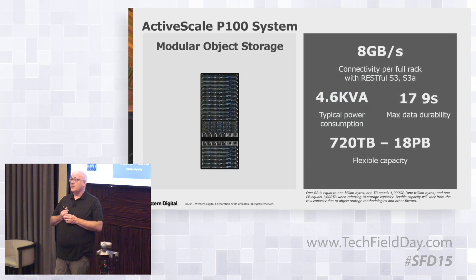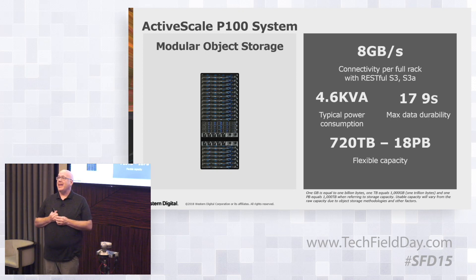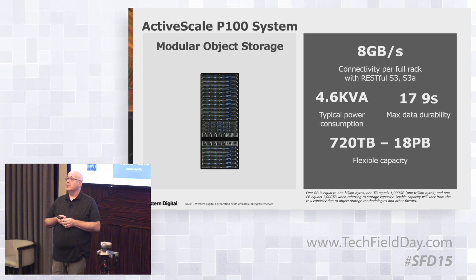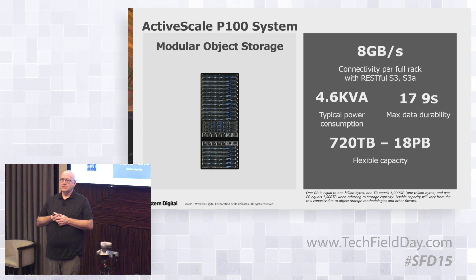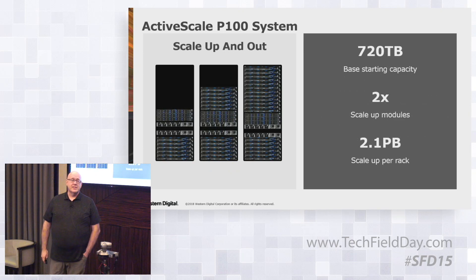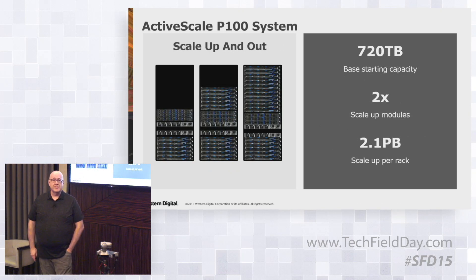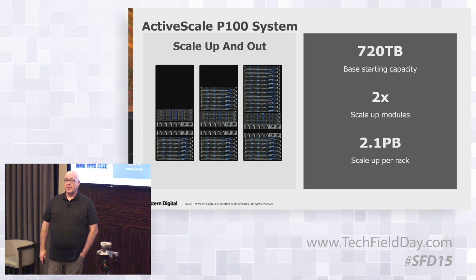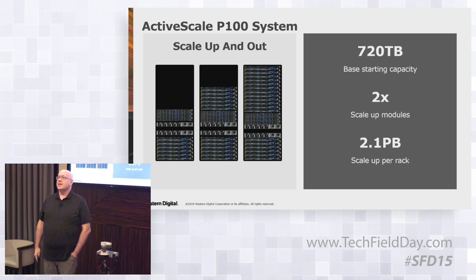Going into the feeds and speeds: a full rack of the P100 can ingest or read about 8 gigabytes per second — S3 or S3A. Data durability is calculated based on the erasure coding algorithm, with math detailed in the white paper. This scales up to about 18 petabytes when fully scaled up. The systems come in pods — you order a basic system and add scale-up and scale-out kits into a full rack, giving you about 2.1 petabytes per rack, starting at a capacity of about 720 terabytes.